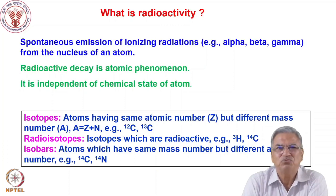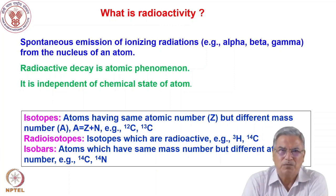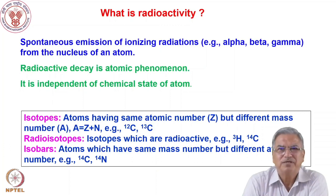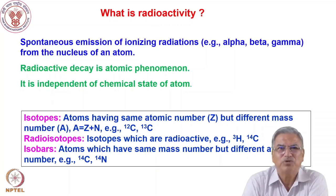Carbon-12 has 6 protons and 6 neutrons, so mass number is 12. Carbon-13 has 6 protons and 7 neutrons, so the mass number is 13. These are the isotopes of carbon. Now, radioisotopes are those isotopes which are radioactive — for example, tritium and carbon-14. Tritium is an isotope of hydrogen, carbon-14 is an isotope of carbon. Another term we will frequently use is isobars. Isobars are atoms which have the same mass number but different atomic number. For example, carbon-14 and nitrogen-14 have the same mass number 14, so they are isobars, with atomic numbers 6 and 7 respectively.